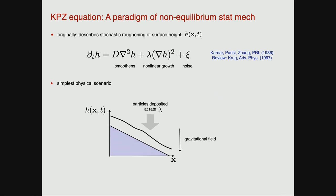A bit of background on the KPZ equation and where it really comes from: it is connected to the roughening of surfaces. The simplest physical situation advocated in the original paper is the growth of interfaces. You have a tilted plane — the tilt is crucial — because when you combine the tilt of the plane with a gravitational field, there is a downhill acceleration as particles fall from the top and the interface grows. This clearly breaks the conditions of equilibrium in a very intuitive way. If you tilt to angle zero, there's a balance of forces and the interface just grows straight up. But when it's tilted, there is a non-equilibrium drive in this problem.